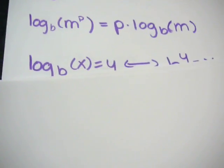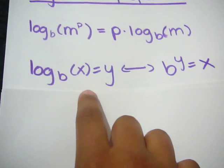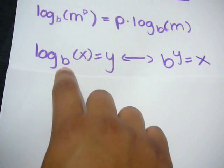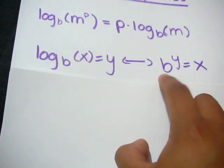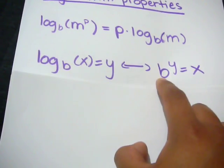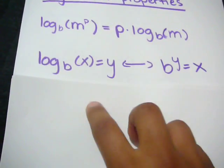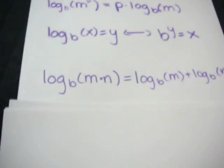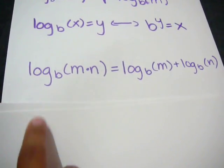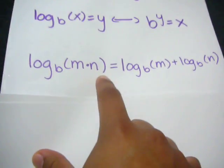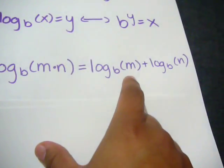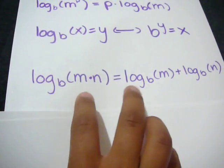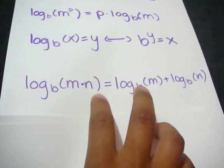Second property: the log of x is equal to y, but since you have the base here, you can rewrite it as the base number to the power of y is equal to x. And then the log of m times n is equal to the log of m plus the log of n — you have to remember that the bases always have to remain the same.